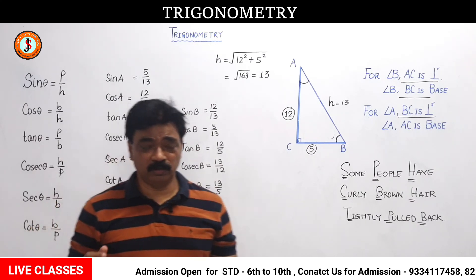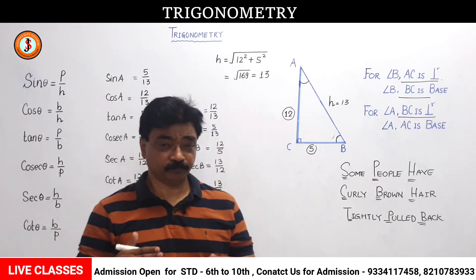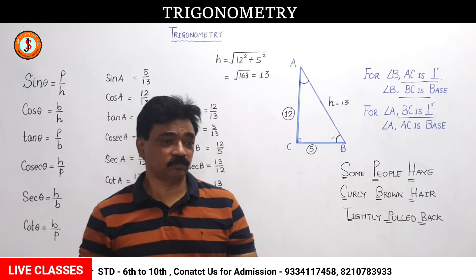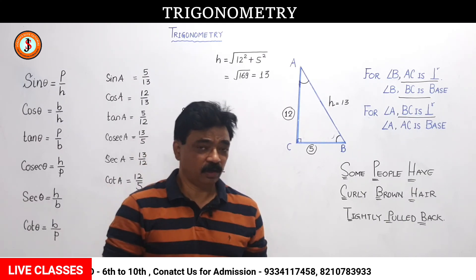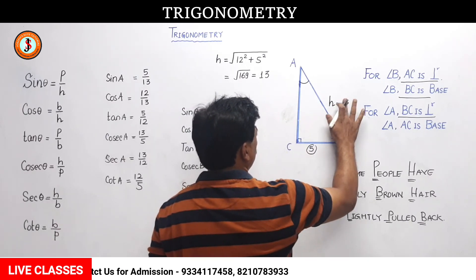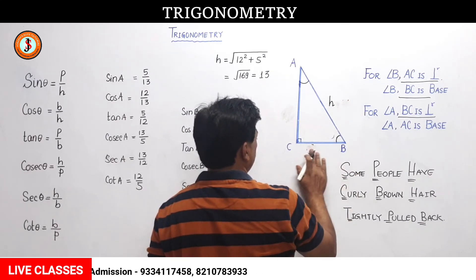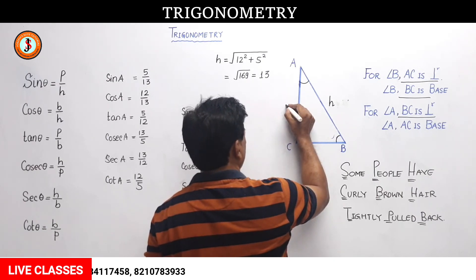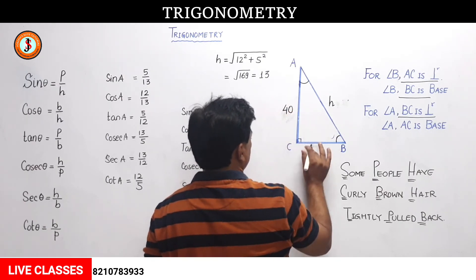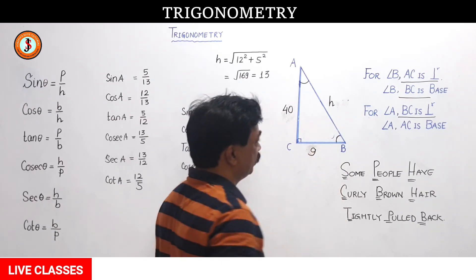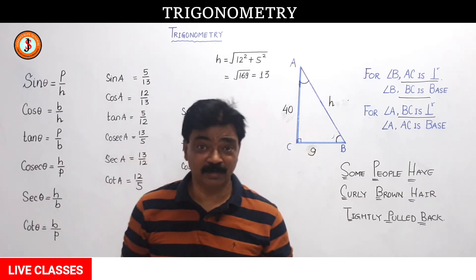Adya, Sagarika, Anushka, Khushi, Ankita — all of you will try to make this sum now. For homework: if this side is 40 and this is 9, find out all the trigonometric ratios in terms of angle A and angle B. Thank you.